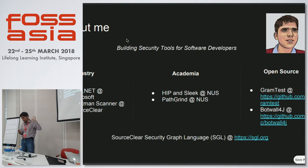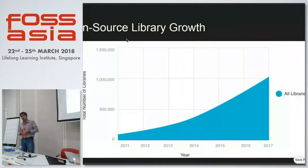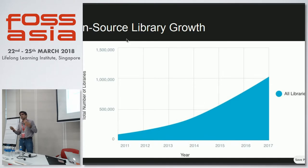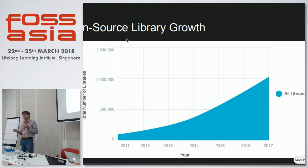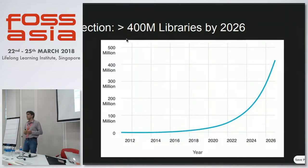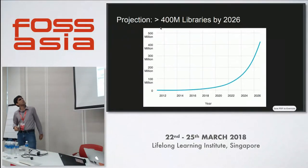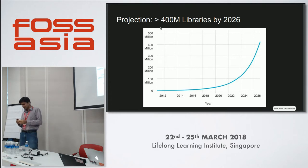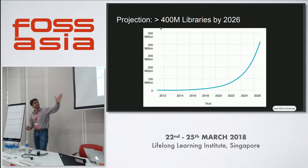Let's set some context about why the use of open source and third-party dependencies is a big risk to enterprises. Looking at data from central repositories like Maven Central, npm, RubyGems, etc., we can see the growth of libraries over the last five or six years. As of 2017, there are over 1 million different libraries, and extrapolating that growth over the next five years suggests there could be over 400 million components by 2026.